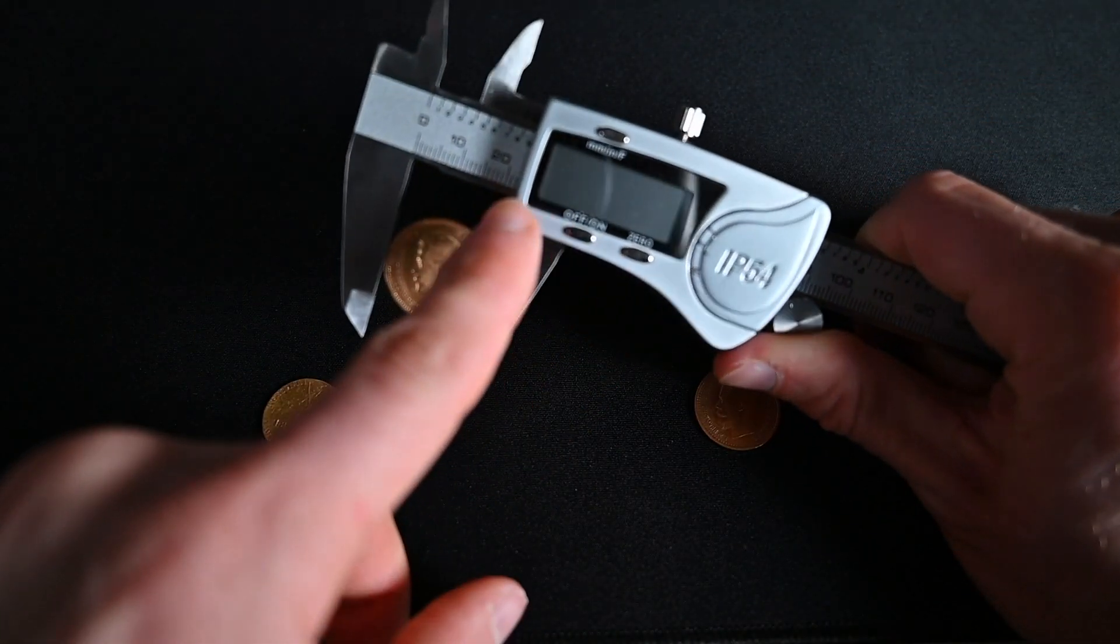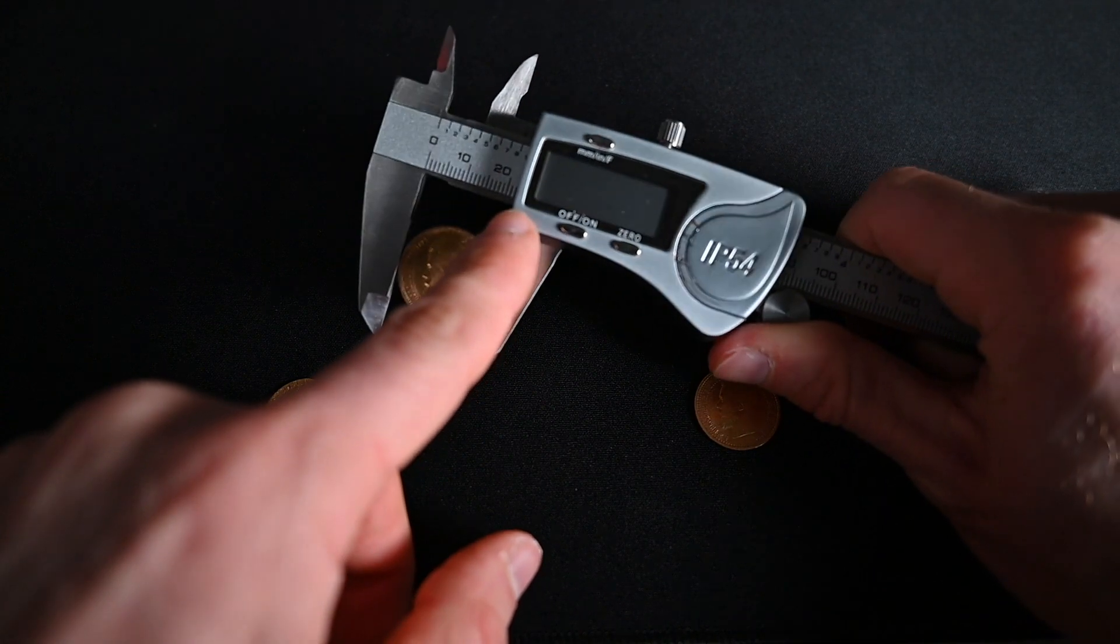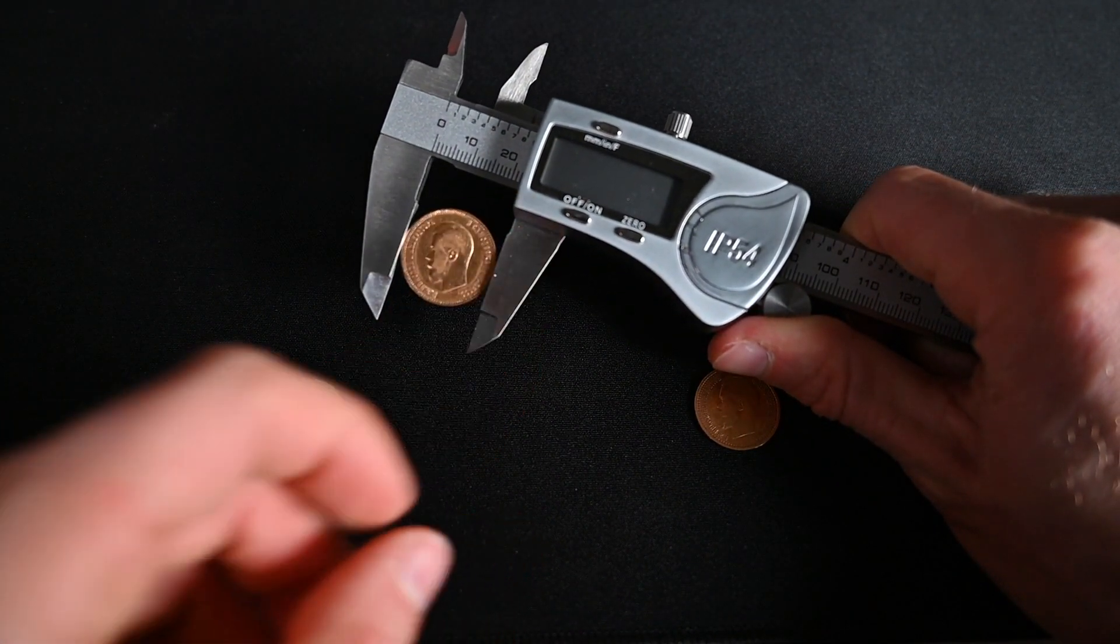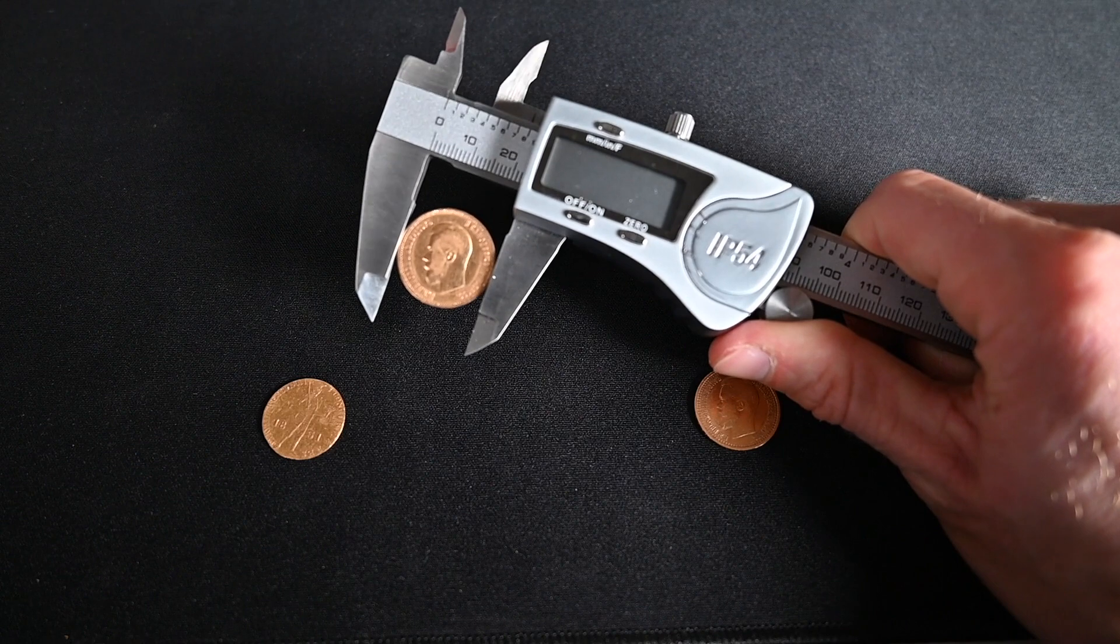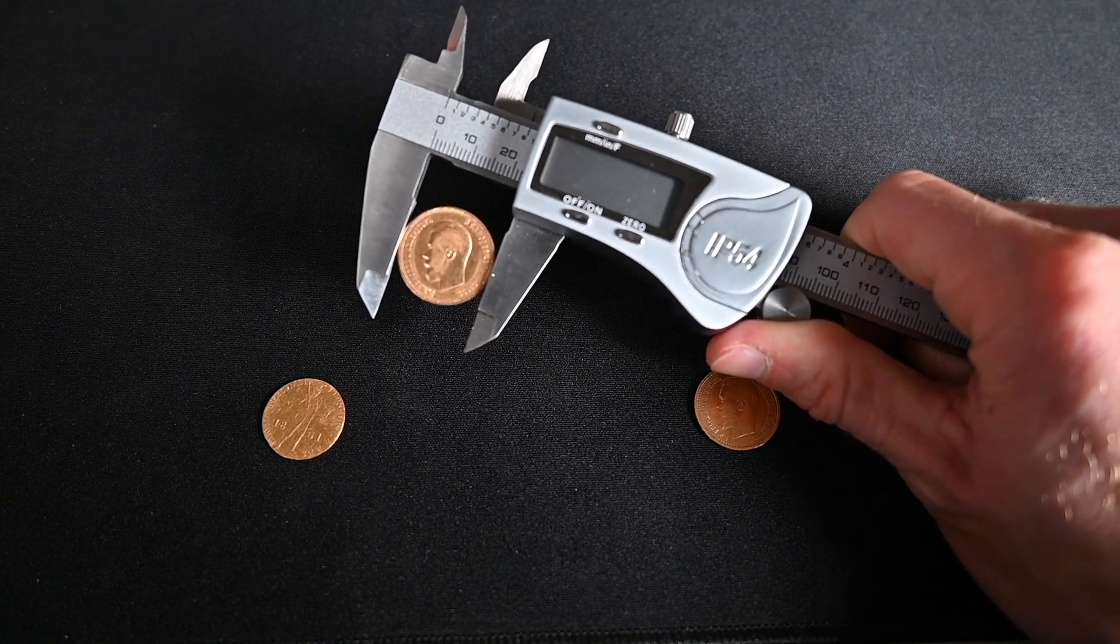But essentially, you just go like this, and you find out what its diameter is by looking here. Right here, at what the readout is. And here we see that it's about 22 millimeters. And what's it supposed to be? Well, it's supposed to be 22.5 millimeters.